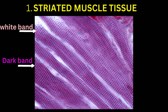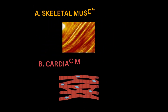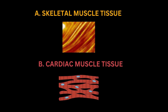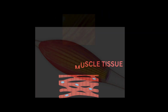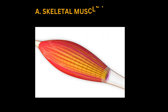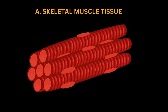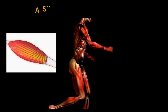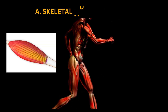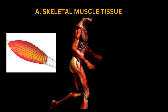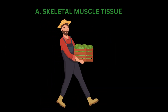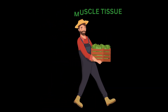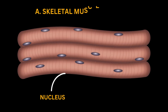Striated muscle tissue is further divided into two types: skeletal muscle and cardiac muscle. Skeletal muscle has a striated appearance with long cylindrical fibers, and is found attached to bones by tendons. It is responsible for voluntary body movements, such as walking and lifting. Skeletal muscle is multinucleated, containing multiple nuclei within each muscle fiber.